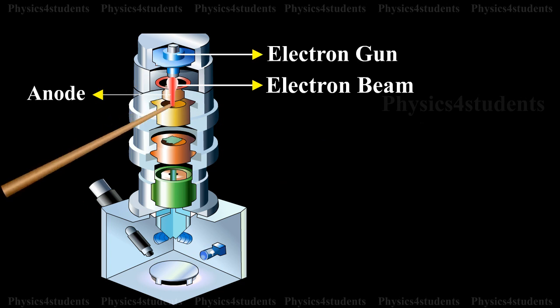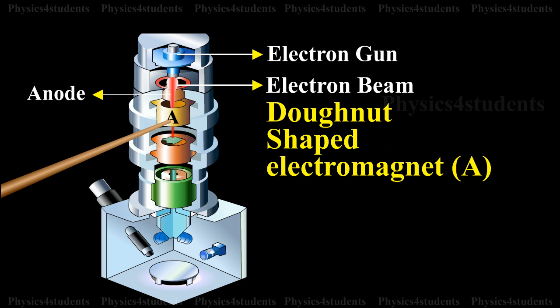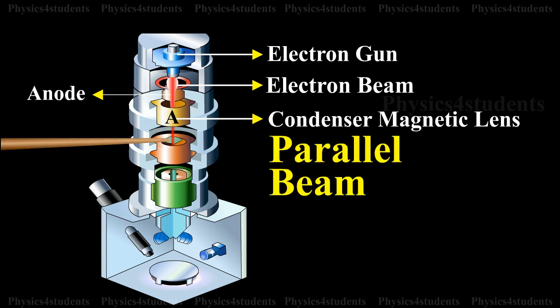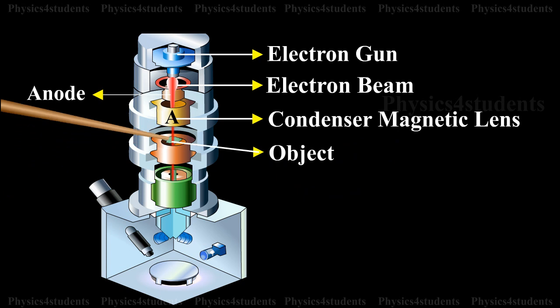A fine beam of electrons is made to pass through the center of the donut shaped electromagnet A, i.e., the condenser magnetic lens. The electrons get deflected to form a parallel beam which strikes the object to be magnified.